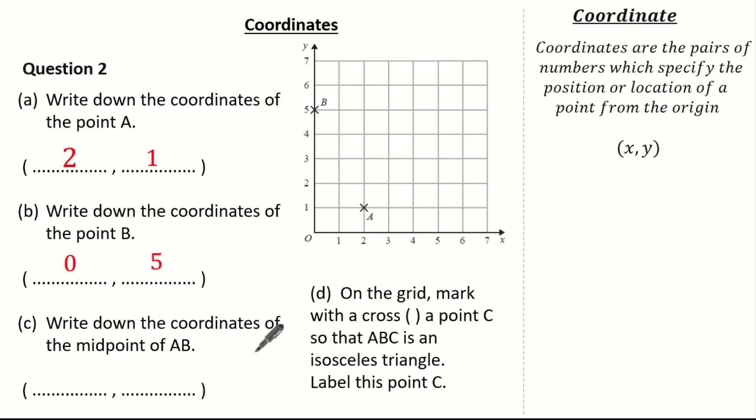Now we're asked to write down the coordinates of the midpoint ab so let's draw a line. Drawing our line you might be able to spot our midpoint quite easily. So the midpoint is identified as from the origin 1, 3. So that's the coordinate of the midpoint of line ab.